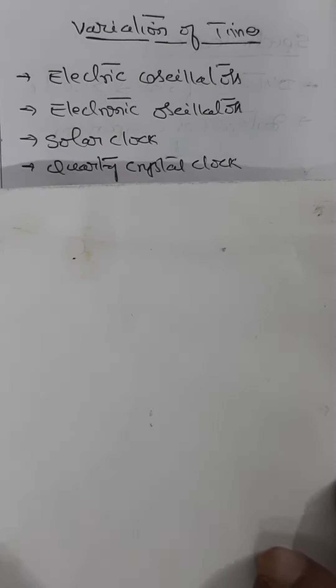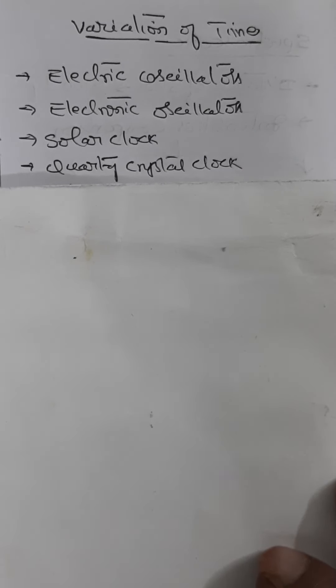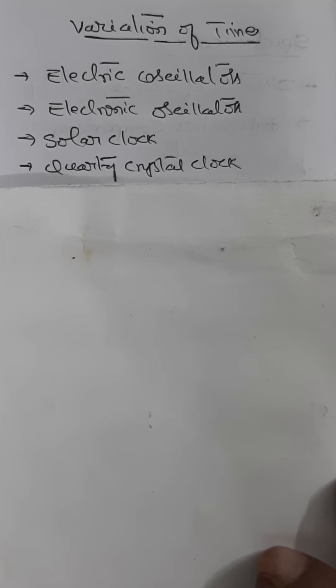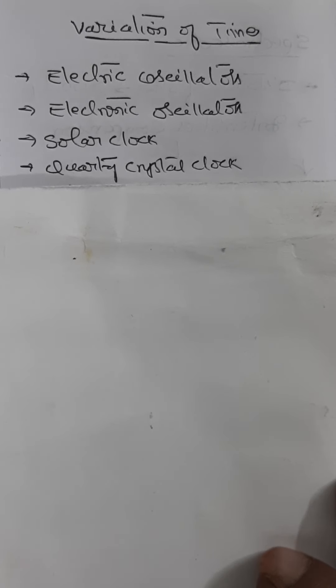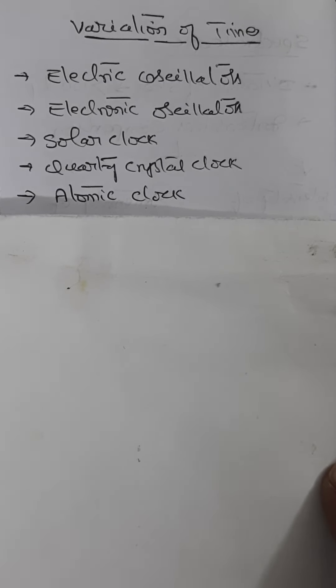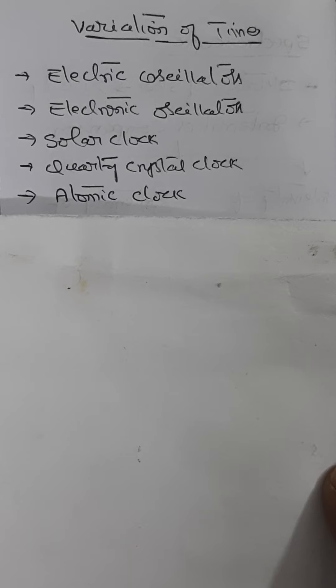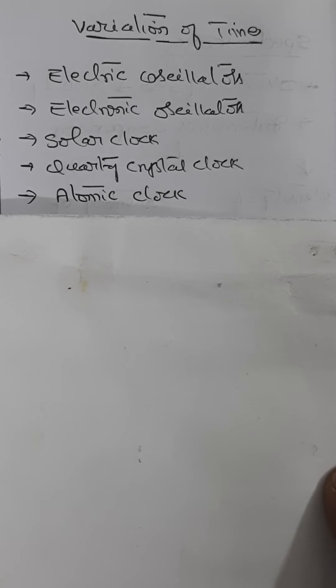A quartz crystal shows the piezoelectric effect — when fluctuating pressure is applied across one pair of faces, an oscillating EMF develops across another pair of perpendicular faces and vice versa. These oscillations are used for measuring time. Quartz crystal clocks have achieved an accuracy of 1 second in every 10 to the power 9 seconds. Atomic clocks measure time intervals of the order of picoseconds, approximately 10 to the power minus 12 seconds. The caesium-133 atomic clock, developed in 1964, has an accuracy of 1 second in every 10 to the power 11 seconds.